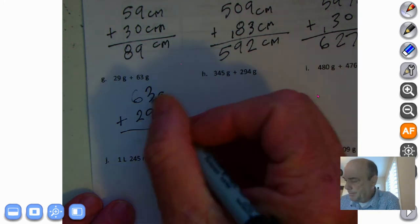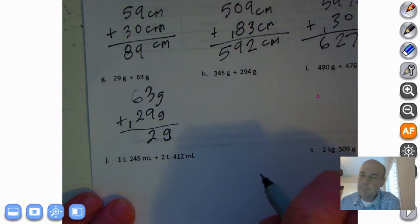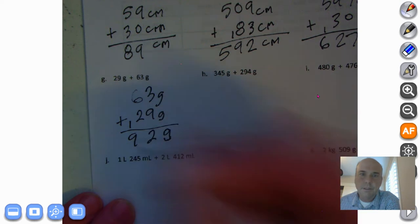Welcome back. Three grams plus nine grams is 12 grams, so there's my two ones and my one ten. 60 grams plus 20 grams plus 10 grams is 90 grams, and there is our answer.